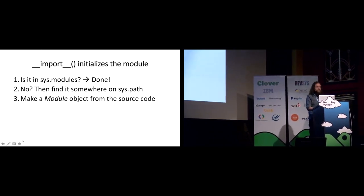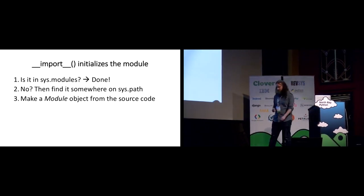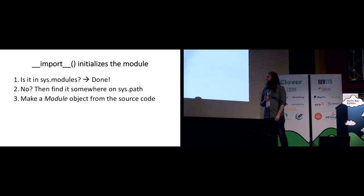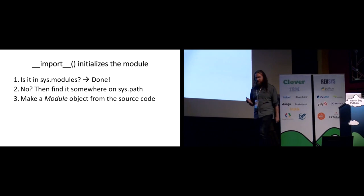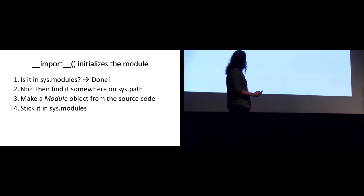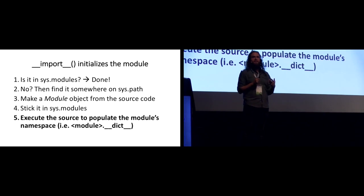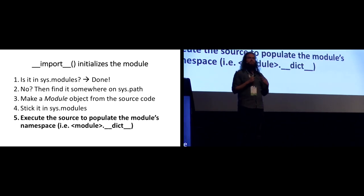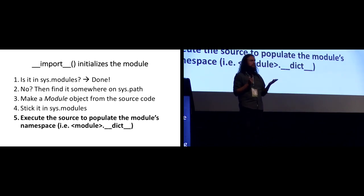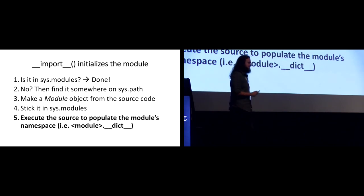Once Python has found your code, it's time to make the module object. Python has a built-in type called module type; it will instantiate an instance of module type passing in the source code it just found. This partially initialized module object will be put in the module cache for later use. Finally — the exciting part — Python will initialize your module by executing the entire source code. Any variables or functions defined during that execution will be retained inside a special dictionary called a namespace. You can see what's in that namespace by looking at the dunder dict attribute on a reference to that module.